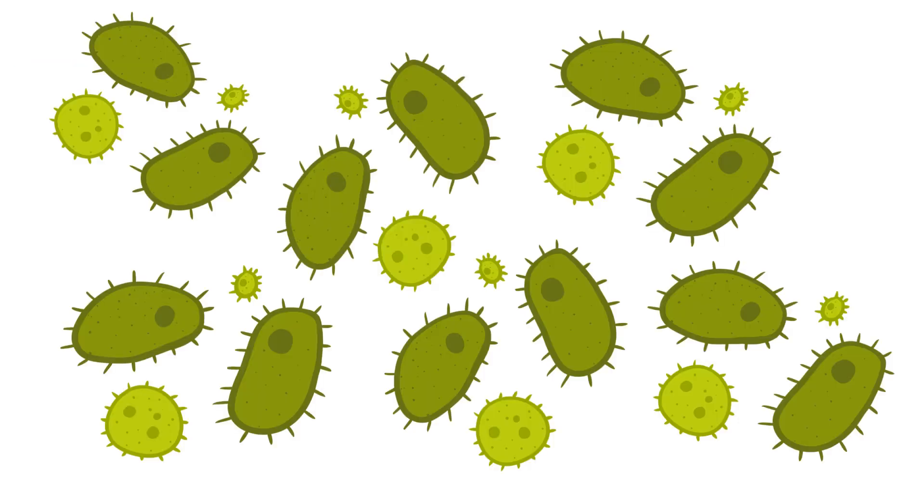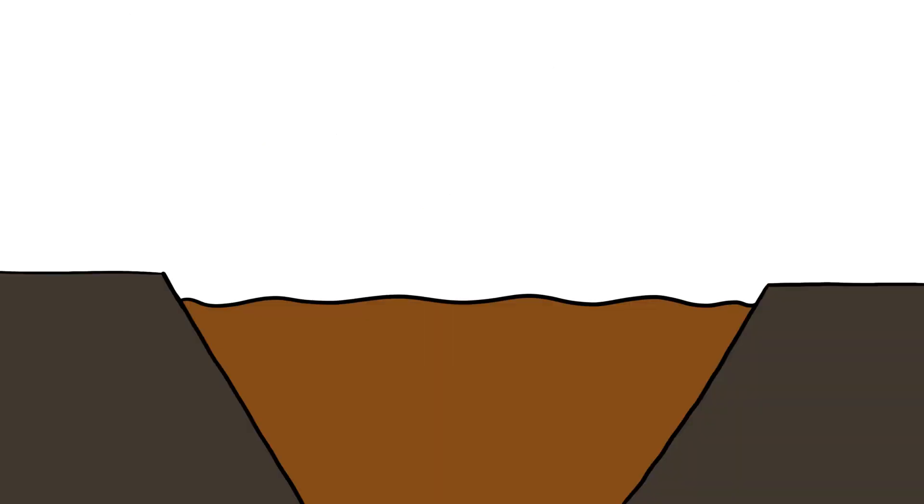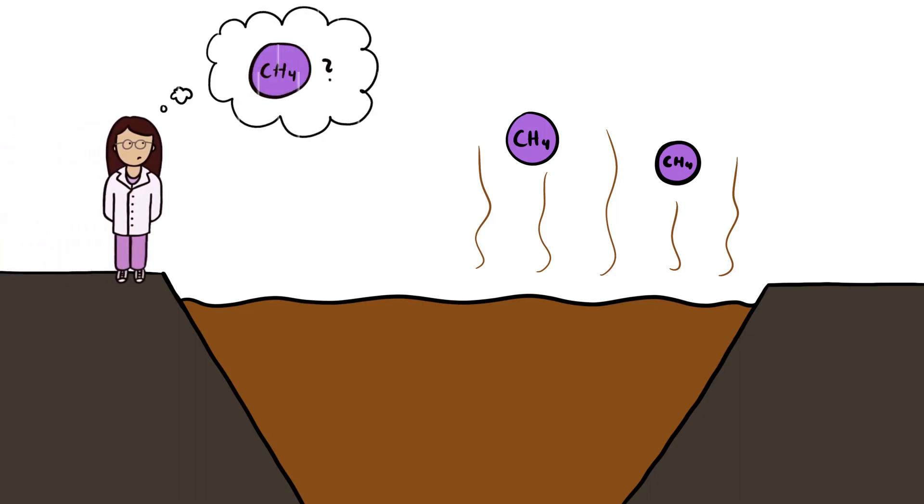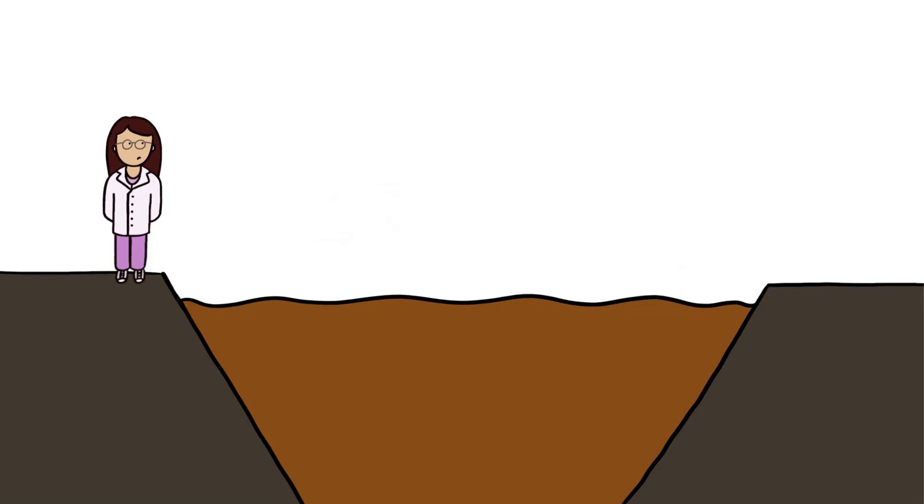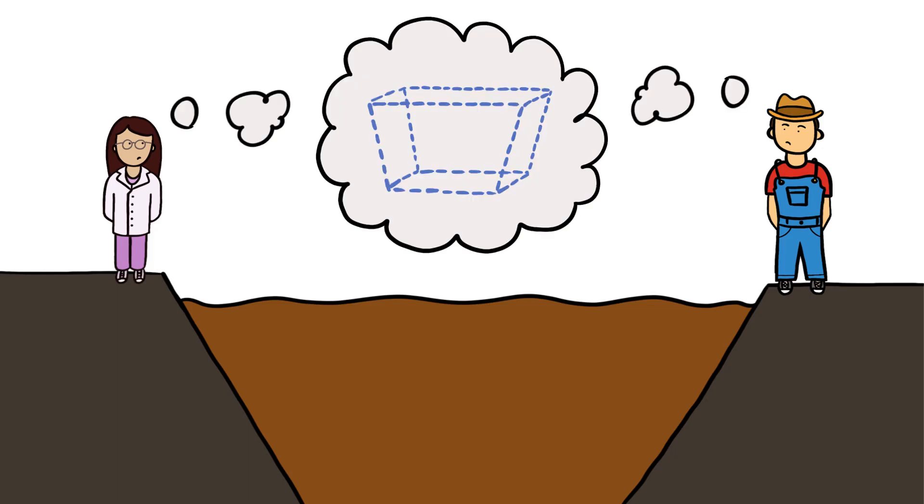Air quality researchers are concerned with the release of methane, a potent greenhouse gas from manure storage. Researchers can estimate methane emissions from storage if they know how much manure there is. For these reasons, researchers and farmers both need to know and keep track of manure volume.